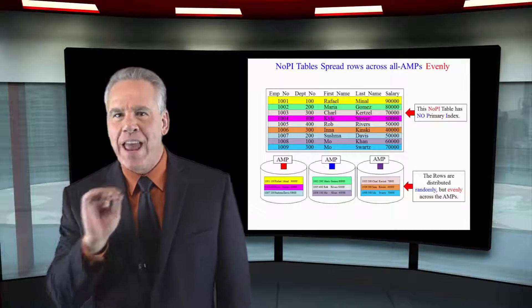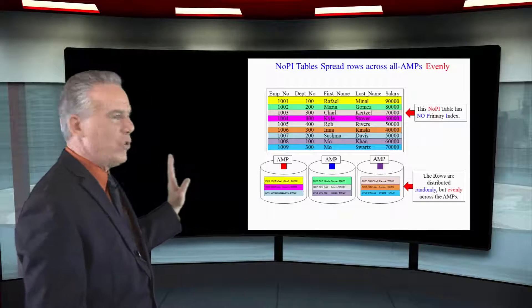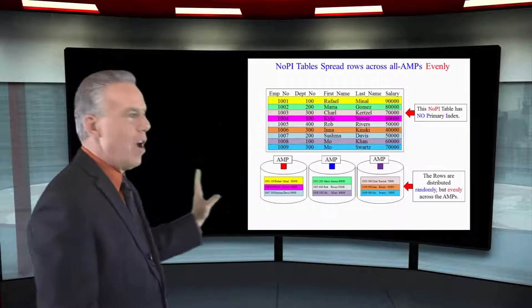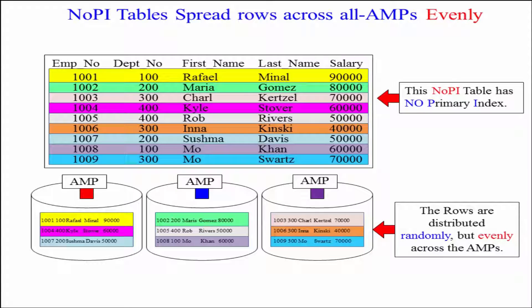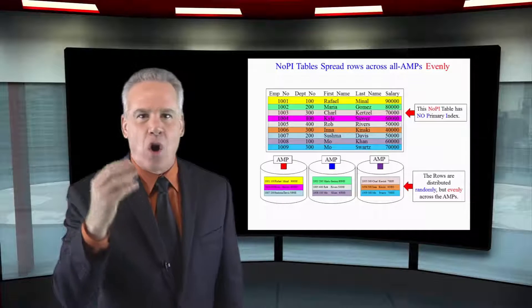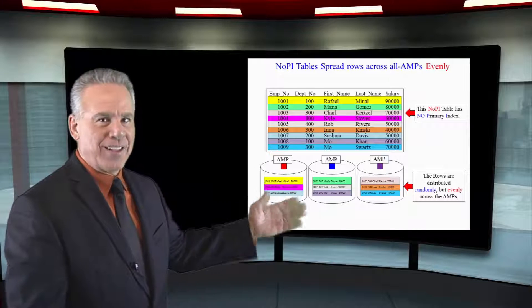A very important aspect of this is the no PI table. So visually I just want you to see our table with nine rows, three amps and three three three are the rows. We've just spread the data evenly but randomly perfectly for ETL staging tables. That's great for no PI tables and you will soon see how no PI tables are always implemented when you have a column or design.